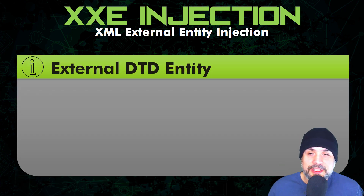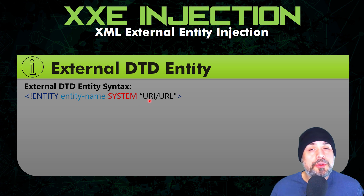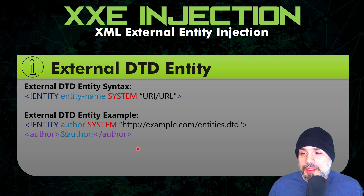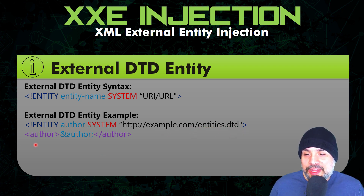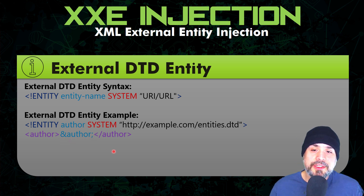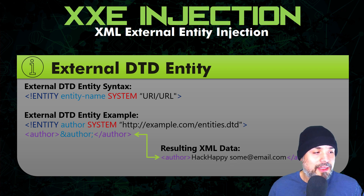Let's take a look at an external entity. It is very similar, except this time we use the entity name followed by the system keyword and then the URI or URL to the external entity. In this example, we have an entity DTD located at example.com. We reference the author entity within the author message, and we get the result: author, hack happy at some@email.com.